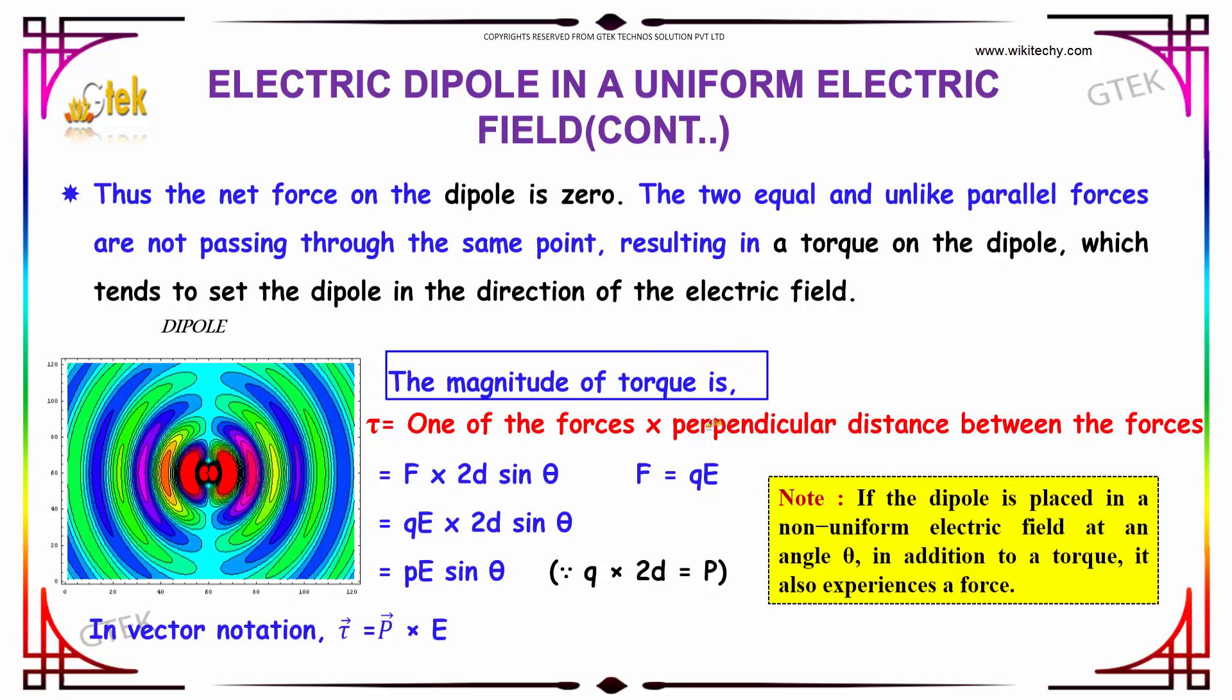The magnitude of torque is one of the forces multiplied by the perpendicular distance between the forces. That is F multiplied by 2d sin theta, which is the perpendicular distance between the forces.